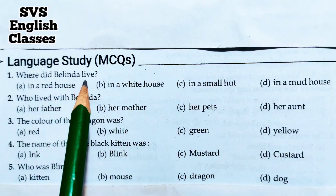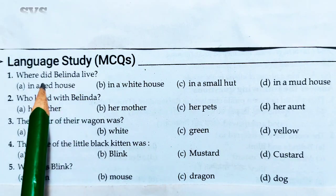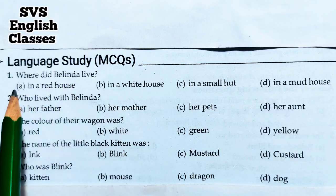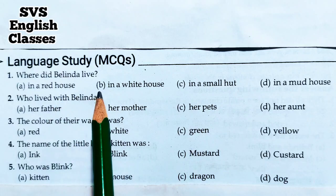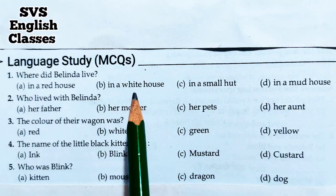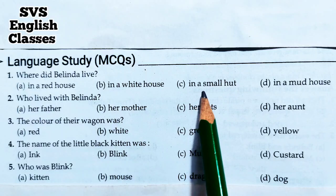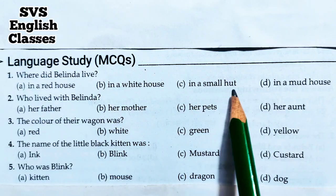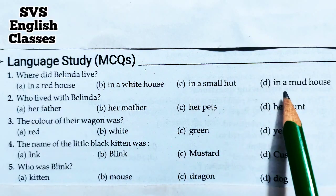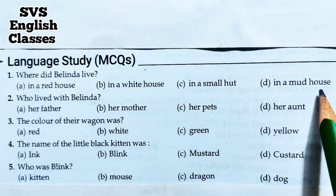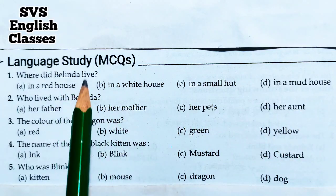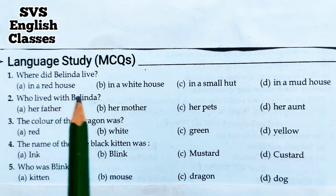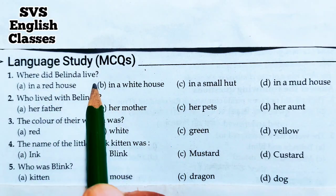Number one: Where did Belinda live? Belinda कहाँ रहती थी? A. In a red house (लाल घर में), B. In a white house (सफेद घर में), C. In a small hut (छोटी सी कुटिया में), D. In a mud house (मिट्टी के बने हुए घर में). Since we have studied the poem, we know that Belinda lived in a white house. So option B is correct.